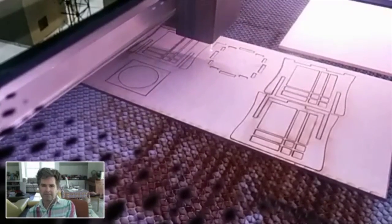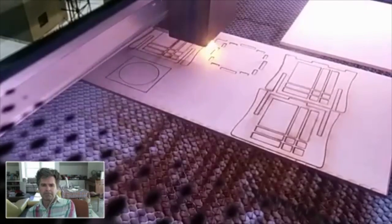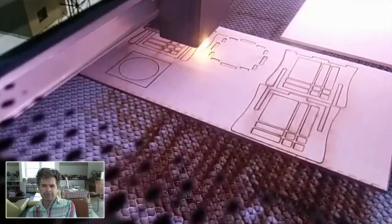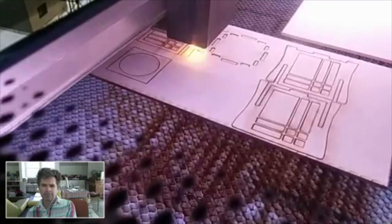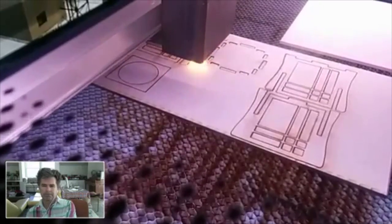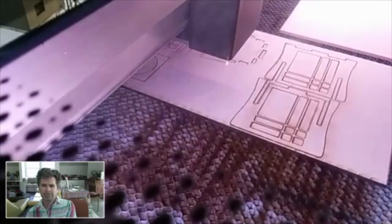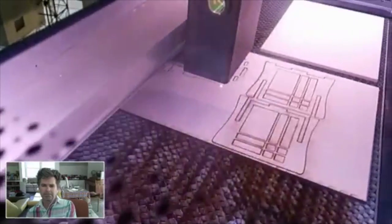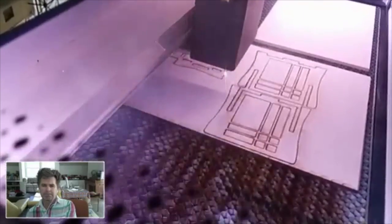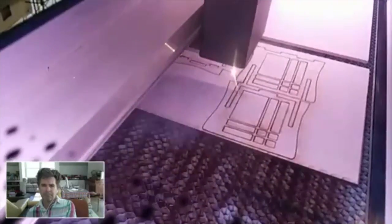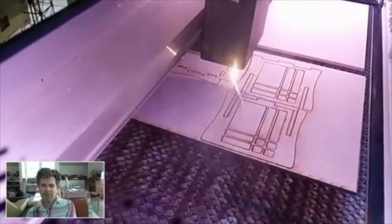There's an autofocus system inside the head that measures the height of the material and then moves the lens up and down as it traverses over the material. You can cut things that are bent or curved, and it also means that you can do multiple passes changing the height of the lens each time so you can go deeper and deeper, which is something nobody's ever done with a laser before.